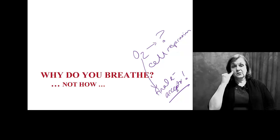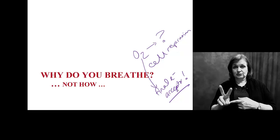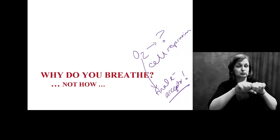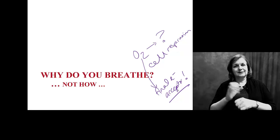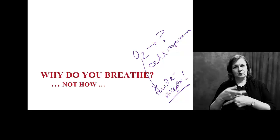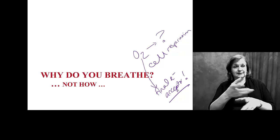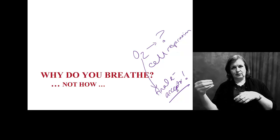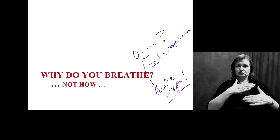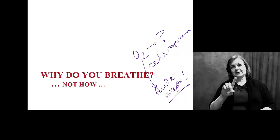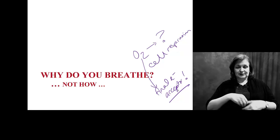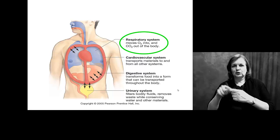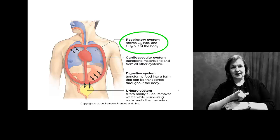If every single cell in your body needs to process glucose into ATP energy, every cell is going to need oxygen. And if every cell is going to need oxygen to facilitate the breakdown of glucose and the conversion to ATP energy, every cell is going to produce CO2 as waste. We have to get oxygen in and we have to get CO2 out. We will look at how this is tied into your digestive system.